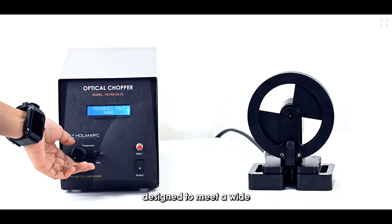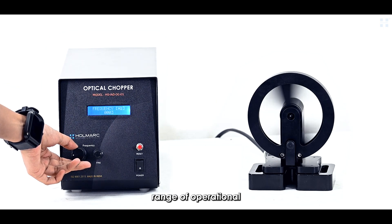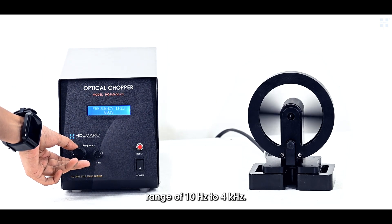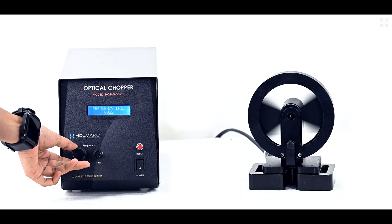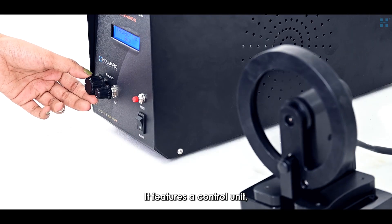Holmark's optical chopper, model HO-5D-O-C-01, is a mechanical device designed to meet a wide range of operational needs across its frequency range of 10 Hz to 4 kHz. It features a control unit,